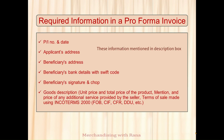Required information in a PI: the PI number and date are important as a unique reference for other documents. The applicant's address and beneficiary's address are needed to identify buyer and seller — though if there is a third-party sourcing office, the address may vary. Beneficiary bank details with SWIFT code are mandatory. Beneficiary signature and company seal — the approved company sign — are also required, along with goods description, unit price, and total value.